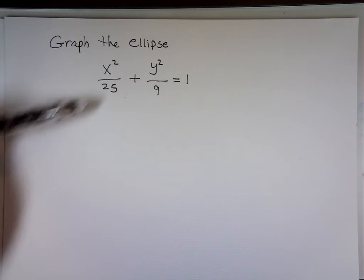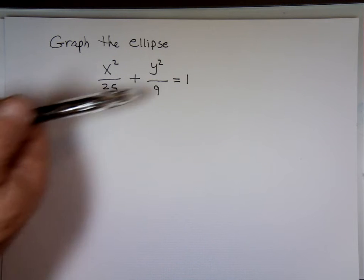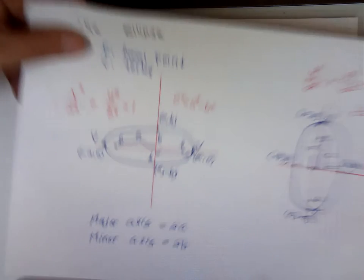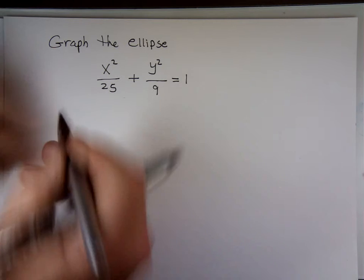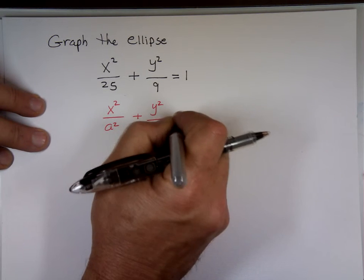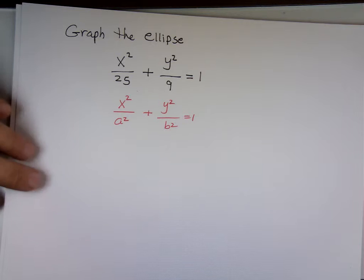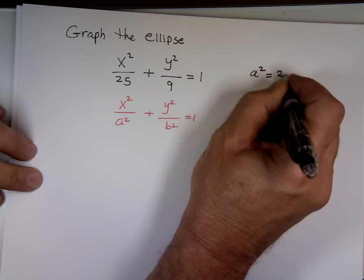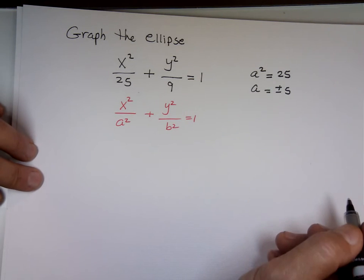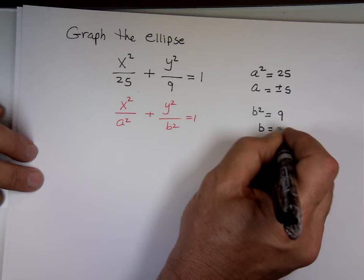Notice that 25 is bigger than 9 — so this is A squared, and that's B squared. Since X is sitting on top of the bigger number, it matches the horizontal format. Comparing to standard form: A squared equals 25, so A equals plus or minus 5. B squared equals 9, so B equals plus or minus 3.